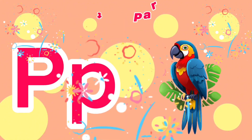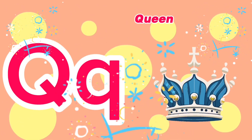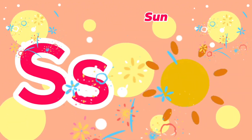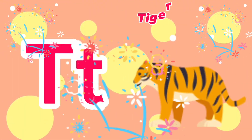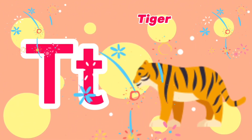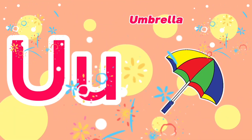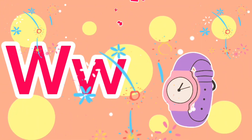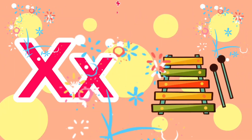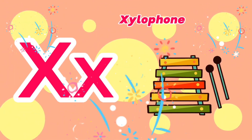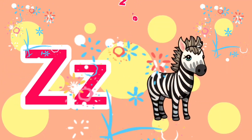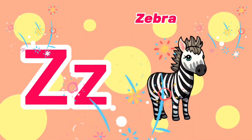P is for Parrot. Q is for Queen. R is for Rabbit. S is for Sun. T is for Tiger. U is for Umbrella. V is for Van. W is for Watch. X is for Xylophone. Y is for Yellow. Z is for Zebra.